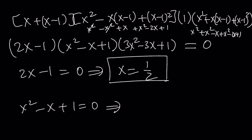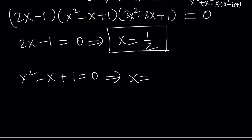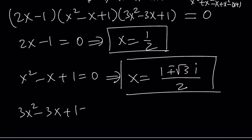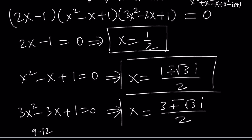Setting x squared minus x plus 1 equal to 0 gives non-real complex solutions: x equals 1 plus or minus the square root of 3i, divided by 2, because the discriminant is 1 minus 4, which is negative 3. From the third factor, 3x squared minus 3x plus 1, we again get a negative discriminant: 9 minus 12 equals negative 3, giving x equals 3 plus or minus root 3i, divided by 6. So we get five total solutions: one real and four complex.